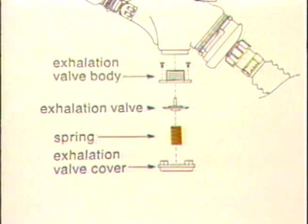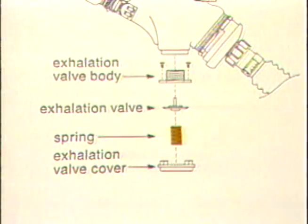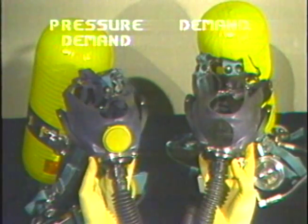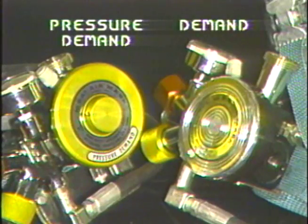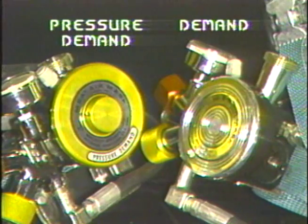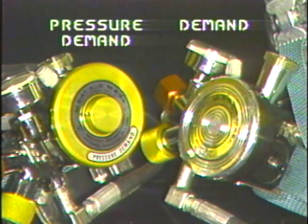The exhalation valve in the face piece is spring-loaded so that it stays closed, holding the positive pressure created by the spring-loaded diaphragm in the regulator. Note that the demand and pressure demand apparatus look almost exactly alike, except that the shape of the face piece exhalation valve in the pressure demand unit is different, and the cover of the spring-loaded pressure demand regulator has a raised hub in the center to hold the spring, compared to the flat cover on the demand regulator, which has no spring.